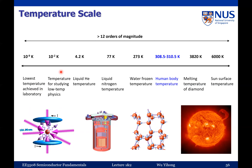Moving up a little bit, there is another temperature range often used in condensed matter studies, called millikelvin — on the order of 10⁻³ to 10⁻² Kelvin. You need special equipment to achieve this. Moving up further, there is another relatively easy-to-achieve temperature: 4.2 Kelvin.